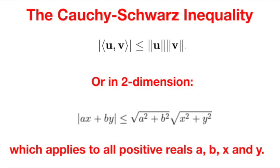For our case today though, we are going to focus on Cauchy-Schwarz inequality in two dimensions. Namely, we are going to prove that the absolute value of ax plus by is less than square root of a square plus b square multiplied by square root of x square plus y square.